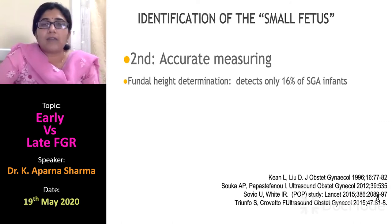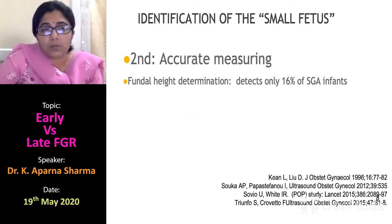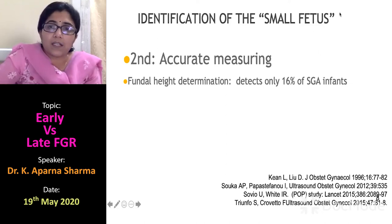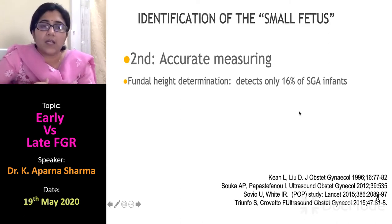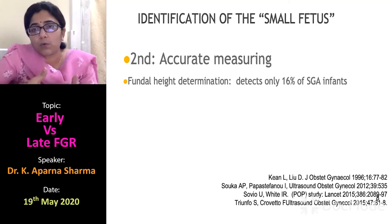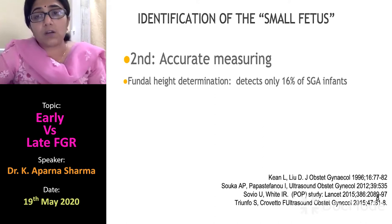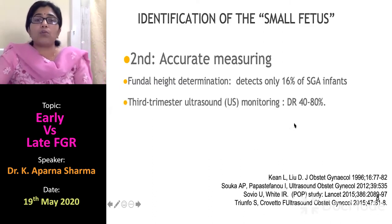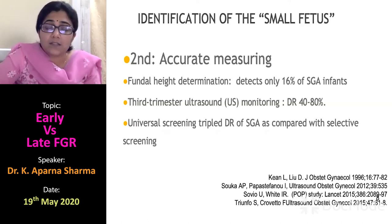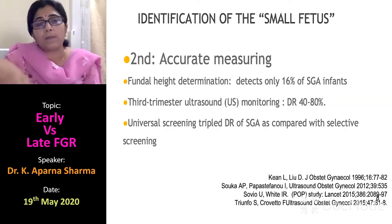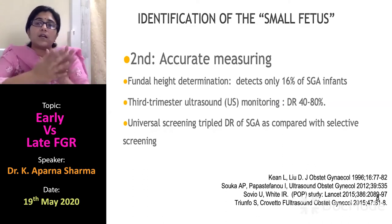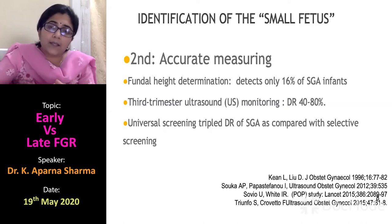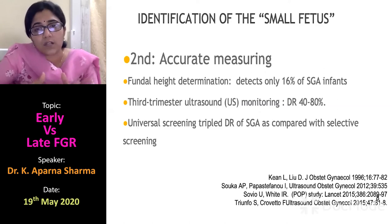The next important part is accurate measurement. The most commonly used clinical method is fundal height determination; however, it will only detect 16% of small for gestational age fetuses. Late onset FGRs may not be detected by fundal height estimation at all. We need to understand the role of third trimester ultrasound in monitoring. It has been shown that universal screening triples the detection rate of small for gestational age compared to selective screening.